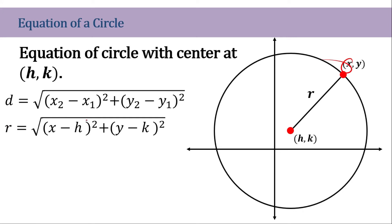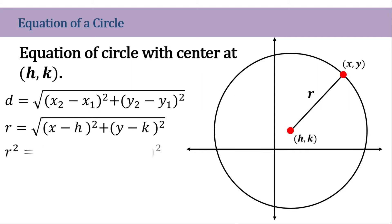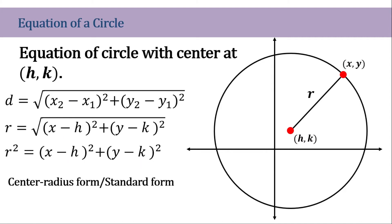So x sub 2 is x minus h, x sub 1. Then y sub 2 is y minus k. So let's square both sides so that we could eliminate the radical symbol. So this will be our new circle equation with the center at (h,k). So that's the standard form of it.